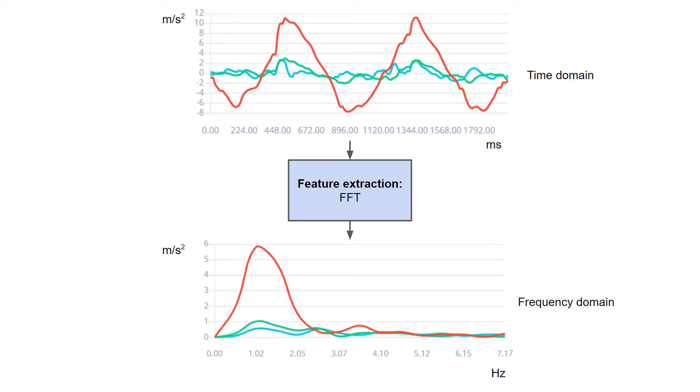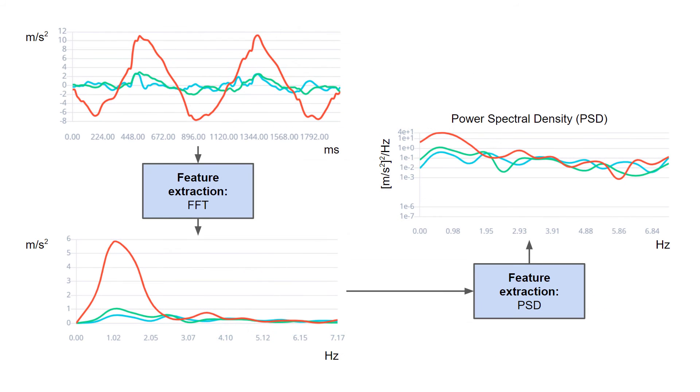Edge impulse takes this even another step further and computes the power spectral density or PSD from the FFT. The FFT can be somewhat misleading sometimes as the amplitude of the FFT in each bin can vary based on the frequency width of that bin. The PSD helps by normalizing the amplitude to the width of each bin.